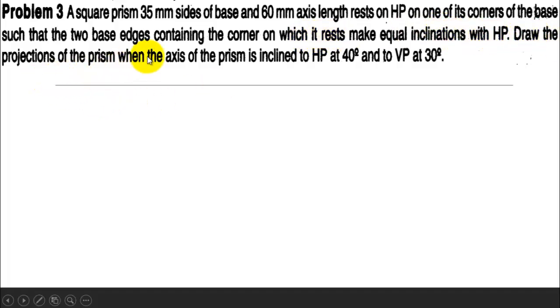Draw the projection of the prism when the axis of the prism is inclined to HP at 40 degrees and to VP at 30 degrees.